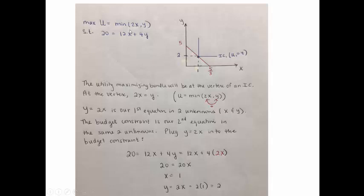Because her preferences are perfect complements, her indifference curves are L-shaped, and we're looking for this point where the vertex of some indifference curve hits the budget constraint.